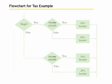Here is what that flowchart would look like. Are they single? If that's true, then check their income. If that's false, then we can assume that they're married and check their income appropriately.